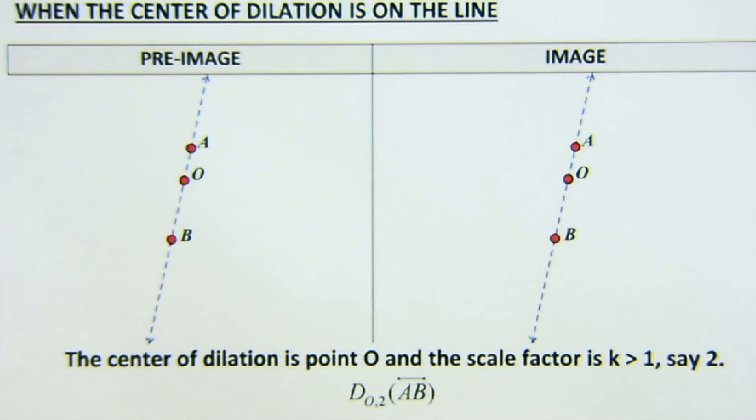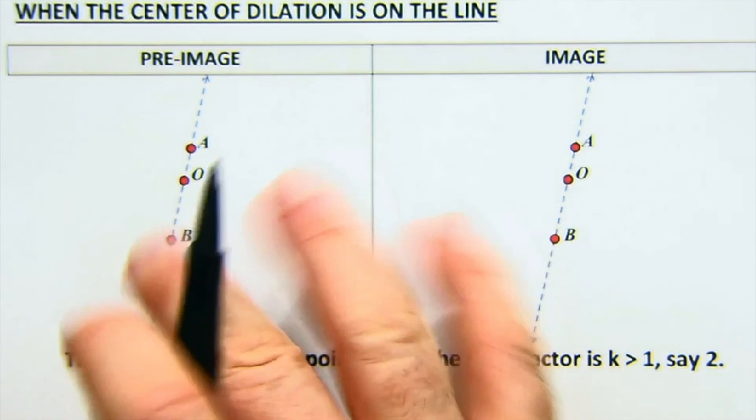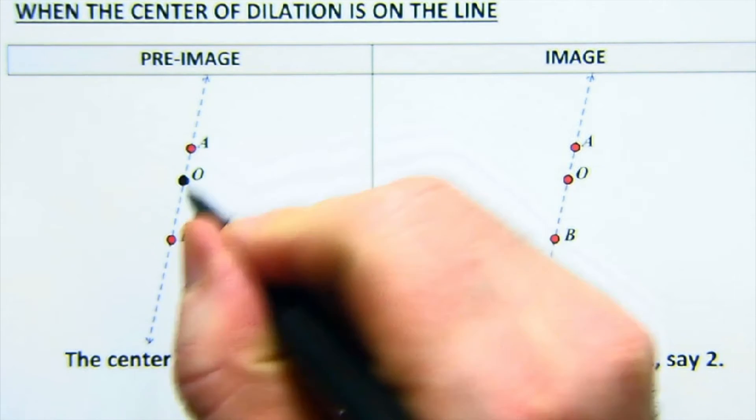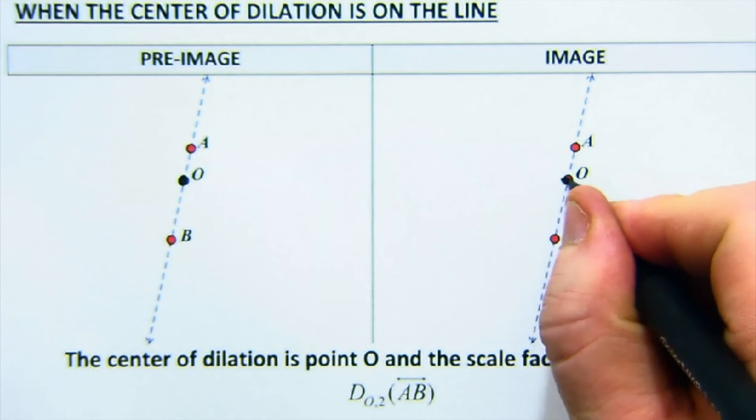Dilating a line is usually quite tricky for some students because they're like, how do you make a line bigger or smaller? But it's not really that. It's about whether the point is on the line - the center of dilation is on or off of the line, and what it does to create more lines or how it impacts it.